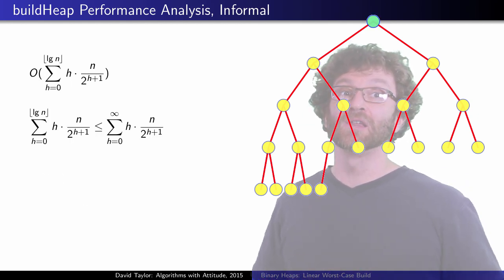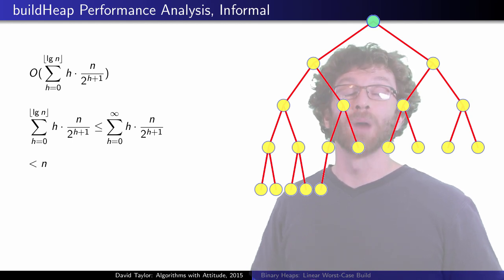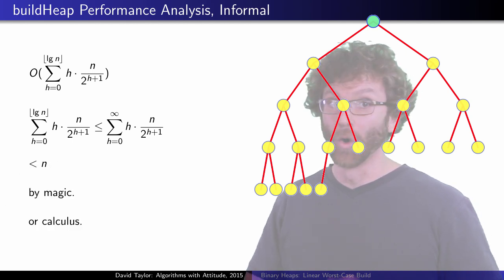With a bit of manipulation, this gives us order n worst case run time, by magic. Or, calculus.